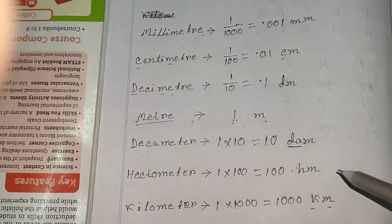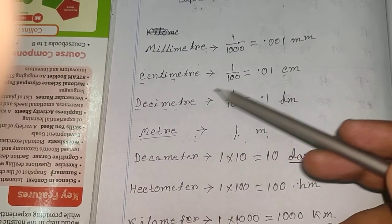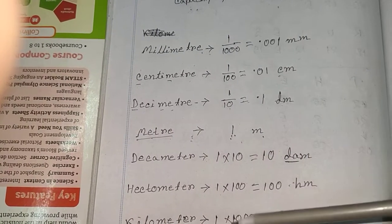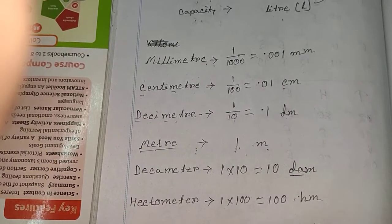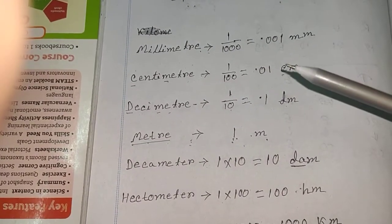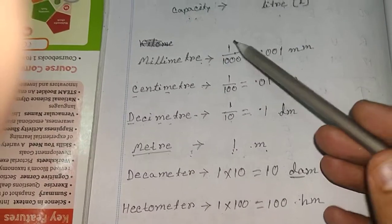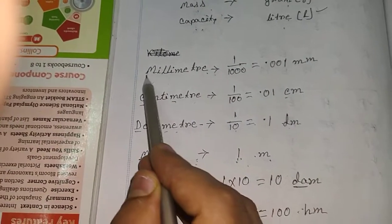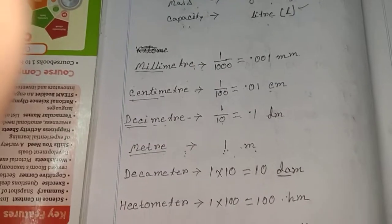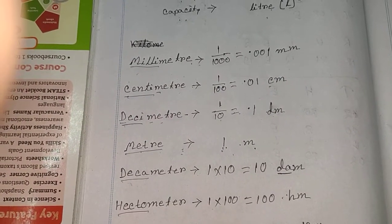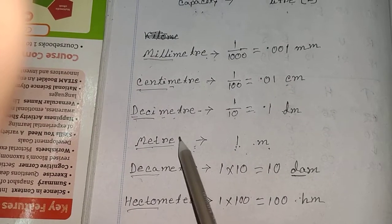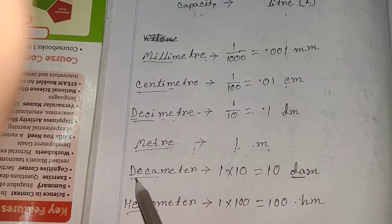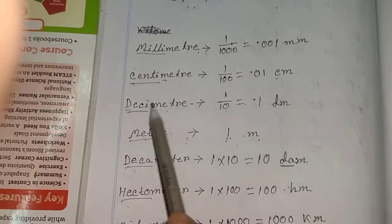So that is the table you have to remember. If we go upward — decimeter, centimeter, millimeter — we divide. If we go downward — decameter, hectometer, kilometer — we multiply.